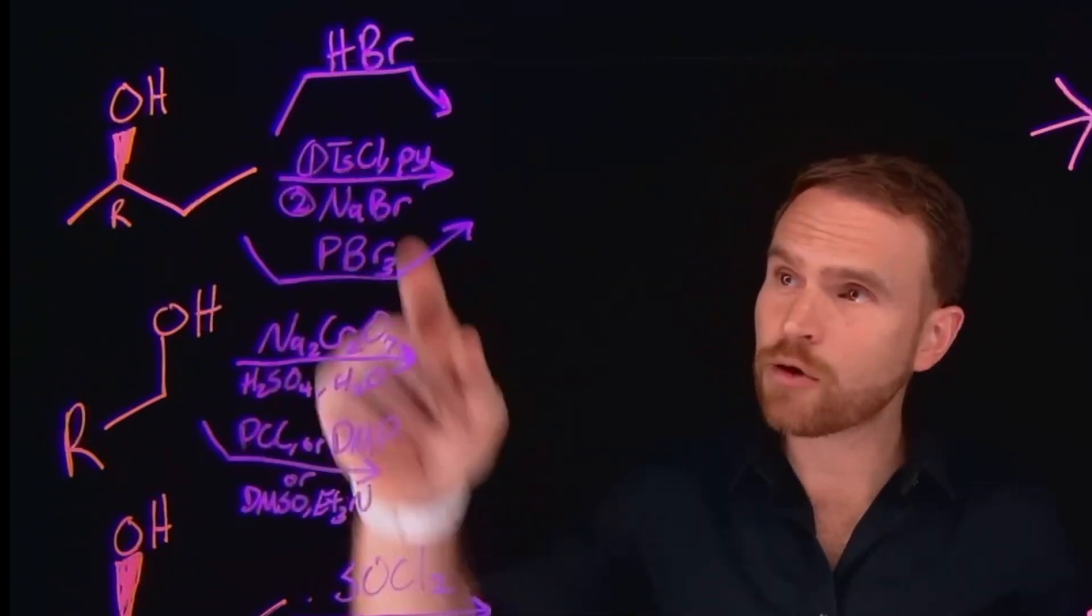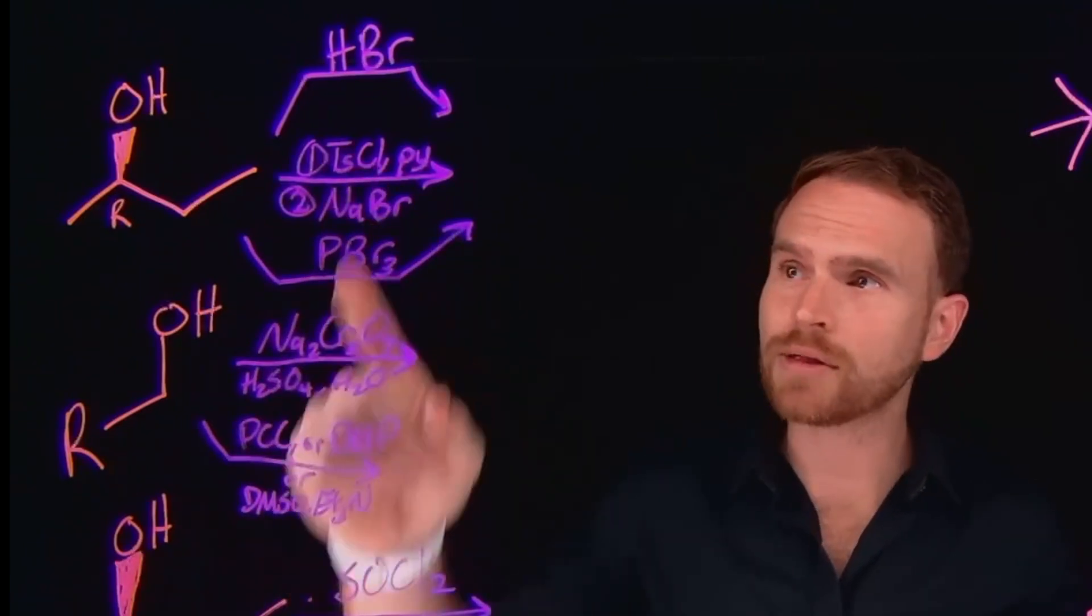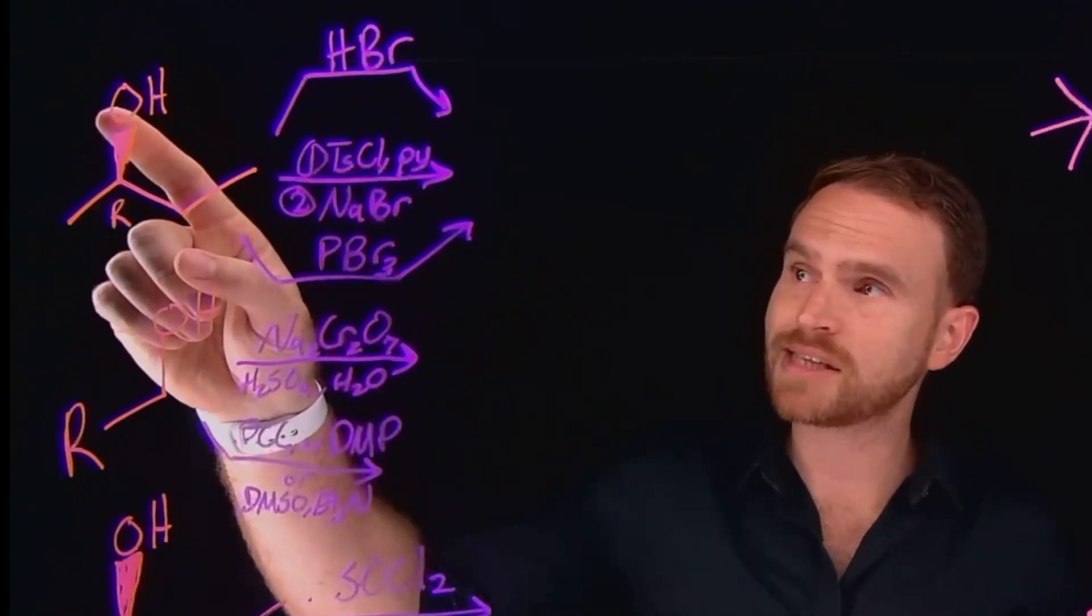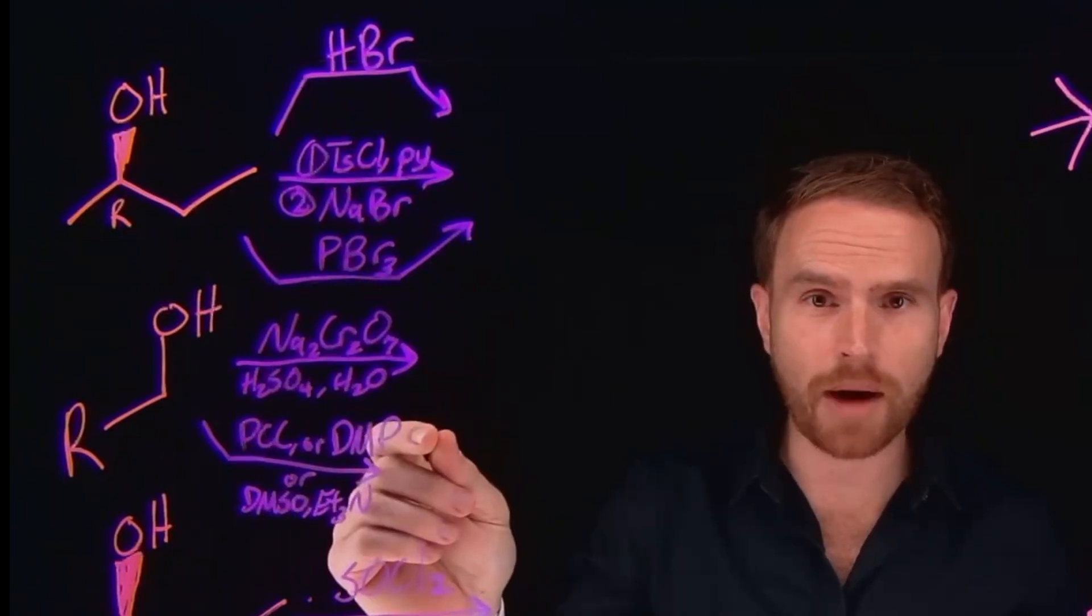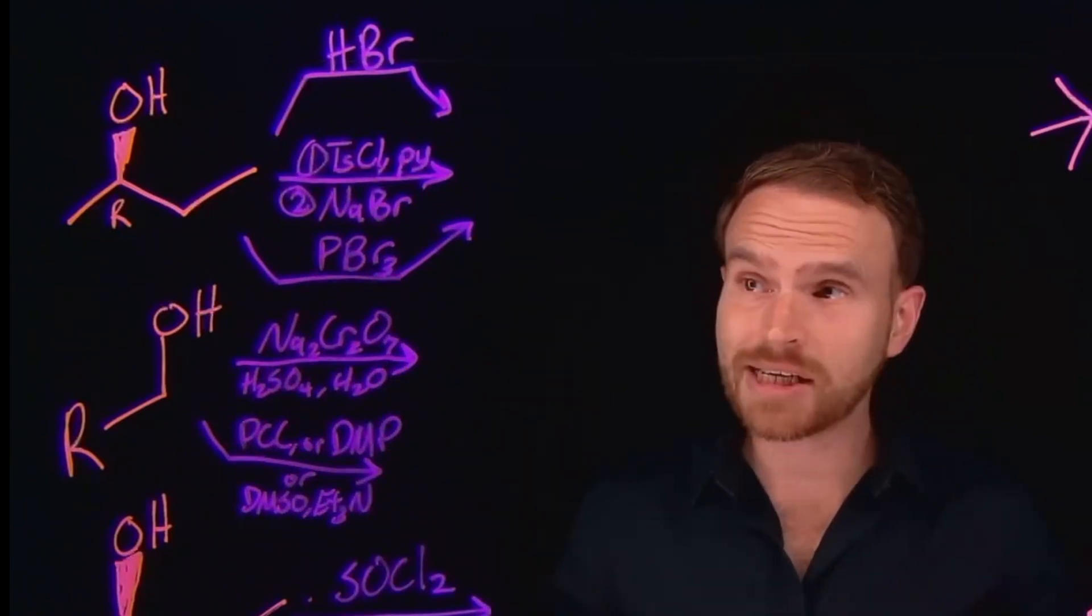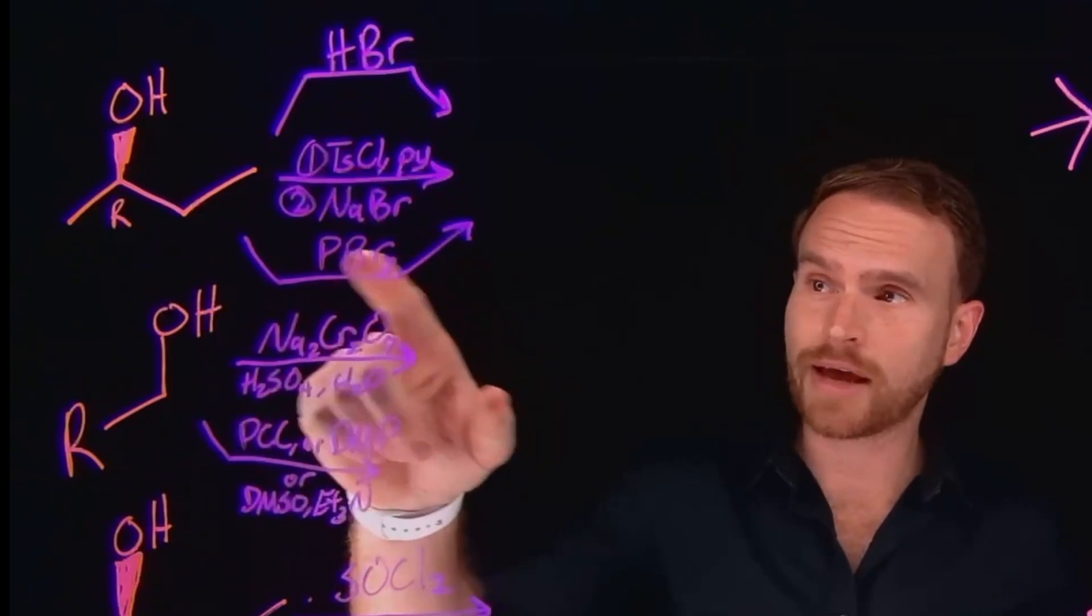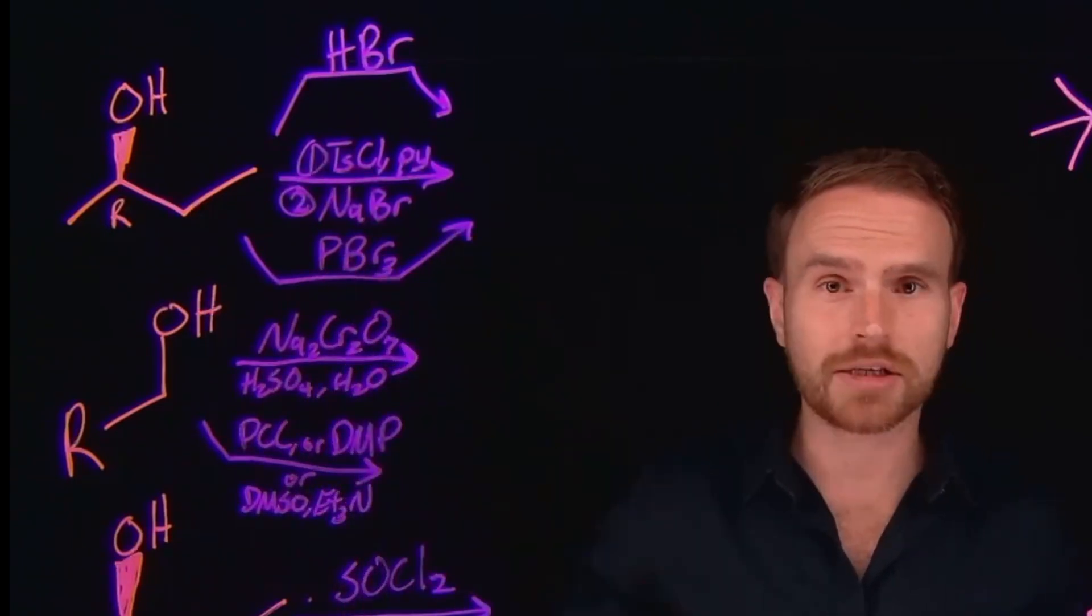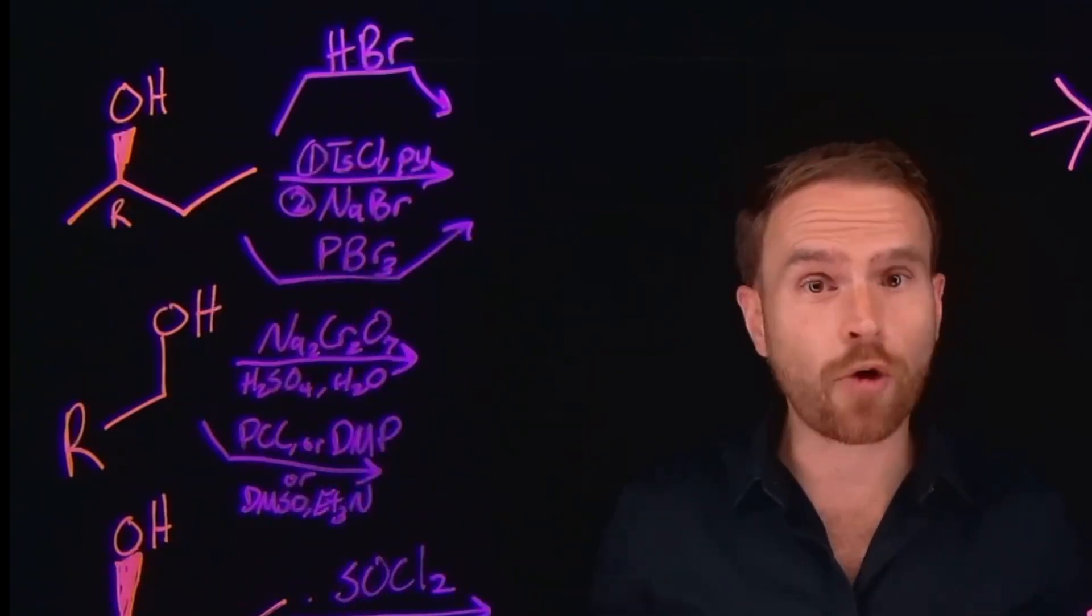To avoid that, there are other conditions you can use, like adding tosyl chloride to make this an OTs group, and then adding sodium bromide to do a substitution reaction. That way you could invert the stereochemistry. Additionally, another way you could avoid that altogether is by using a reagent known as phosphorus tribromide, or PBr3.